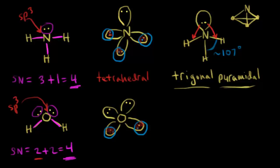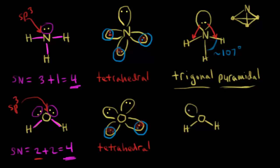The arrangement of these electron pairs is tetrahedral — VSEPR theory says the electron group geometry is tetrahedral. But that's not the geometry of the entire molecule. With water, we have two lone pairs of electrons repelling the bonding electrons, compared to just one lone pair in ammonia. So the bond angle decreases even further, to approximately 105 degrees.